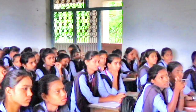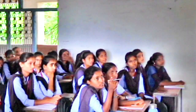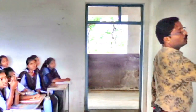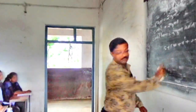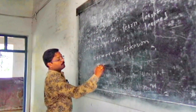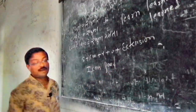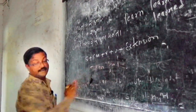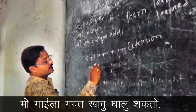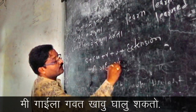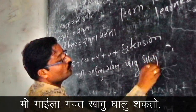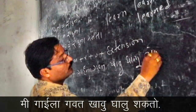You want to say: 'Mi gaila gavad khau ghalu shakto'. Mi means I, shakto means can, feed means khau ghalne — V1. Number 1 Mi, number 2 shakto, number 3 khau ghalne, number 4 gavad, number 5 gaila. Write down the word accordingly. Mi means I, shakto means can, feed means khau ghalne. I can feed grass to cow.